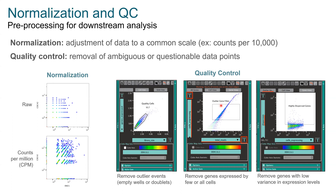The great thing about this gate is you can adjust it in real time and watch your gene sets update. The last cleanup step is filtering for highly variable genes — high dispersion, meaning variability in expression level. We want to focus on genes that show a lot of variability between different cell types. Genes expressed at the same level across all cells are less interesting for differential gene expression. Like the previous filter, this is just a gate you can always adjust if you change your mind.